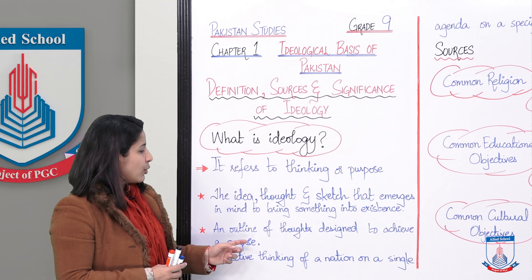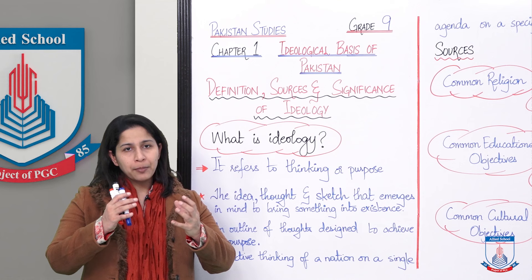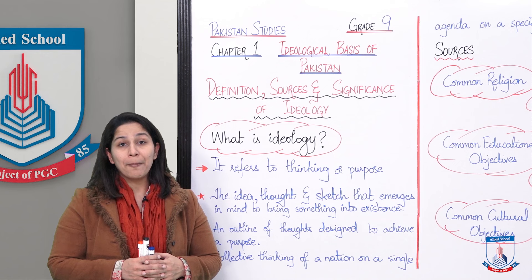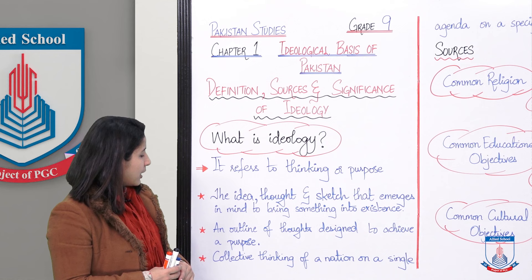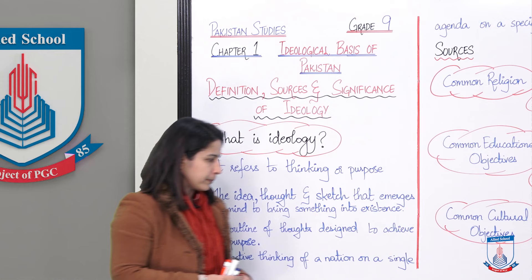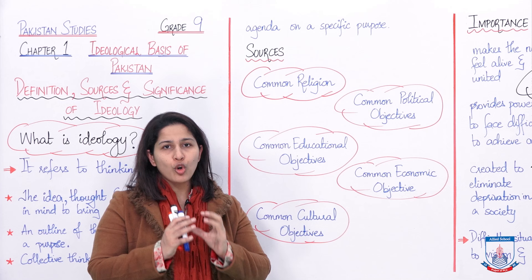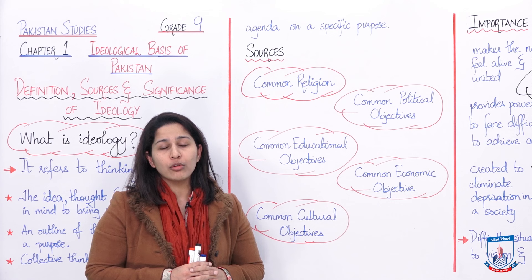The second definition: an outline of thoughts designed to achieve a purpose — a plan, an outline. That is what an ideology is. The third one being: collective thinking of a nation on a single agenda, on a specific purpose — a nation coming together and thinking collectively on a common matter, a common agenda, a common goal. That's also ideology.